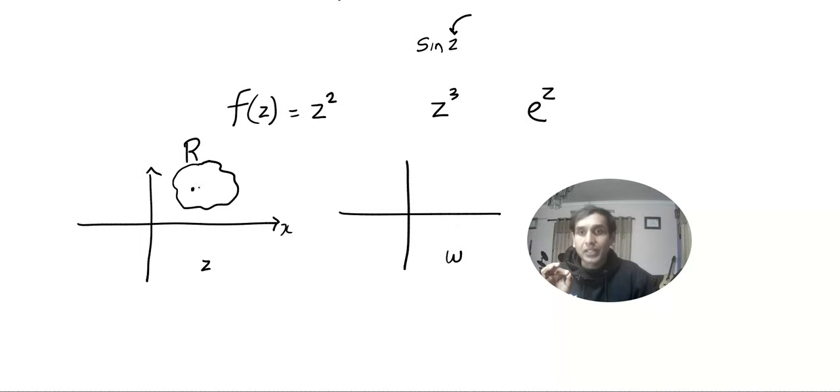Suppose I have a point Z naught. Remember, it is a complex number. Let's say Z naught equal to A plus IB. I want to consider all the numbers. Do you know why we define limits in real numbers? Because no human being knows a number which is bigger or smaller to any other number.